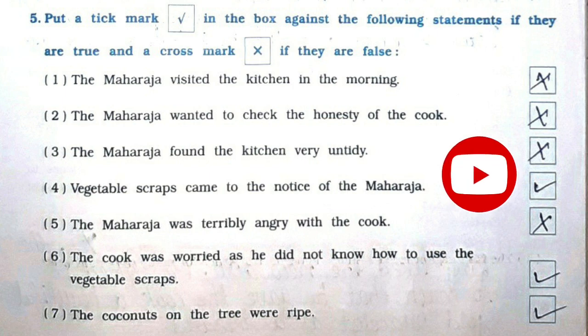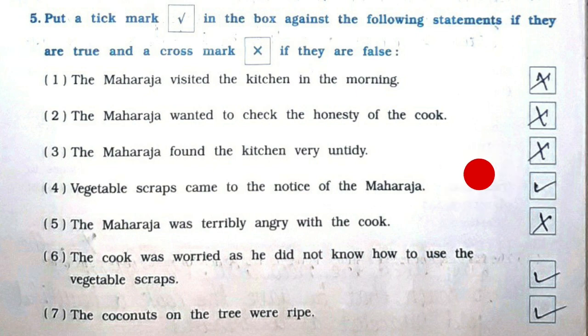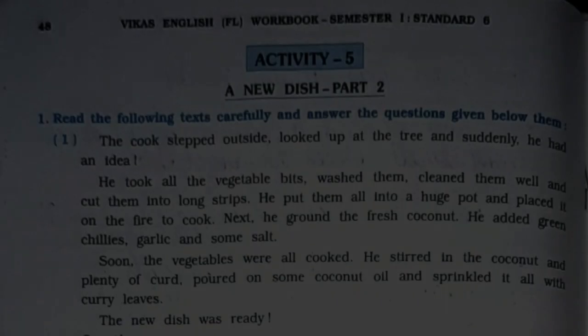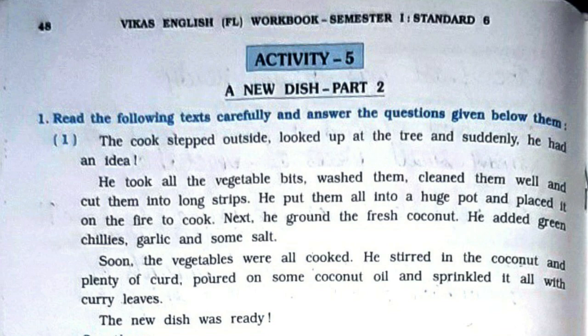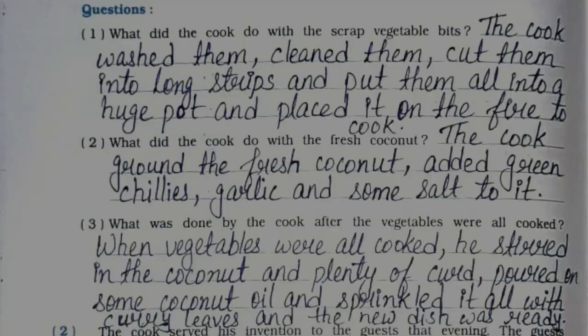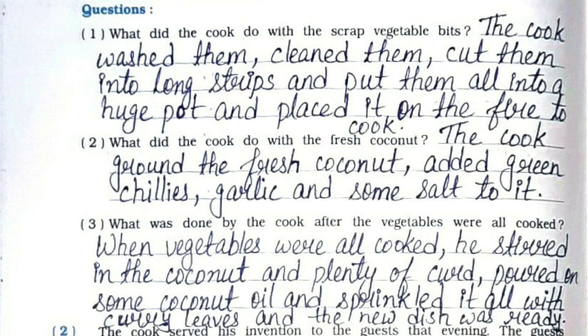Now we will see question number five, that is true or false. First, second, and third are false. Fourth one is true. Fifth one is false. Sixth and seventh are true. Now we will see Activity Five question answers.